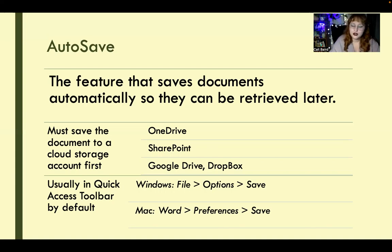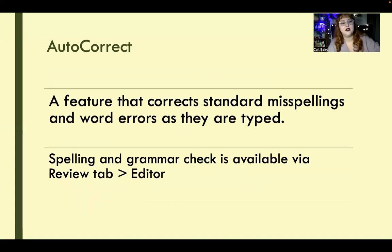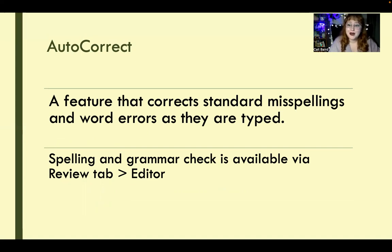I do have a video on how to download documents from the online Office — if you've saved with auto-save and need to get a copy of that file, I have a video demo for that. Auto-correct is something most people are familiar with from their phones. It's an extension of the dictionary: if you make a misspelling or typo that's predictable, it will predict what word you meant and make that correction. It's pretty good, but not always right, so be careful. You can run your spelling and grammar check as well, and you can also customize your auto-corrects.